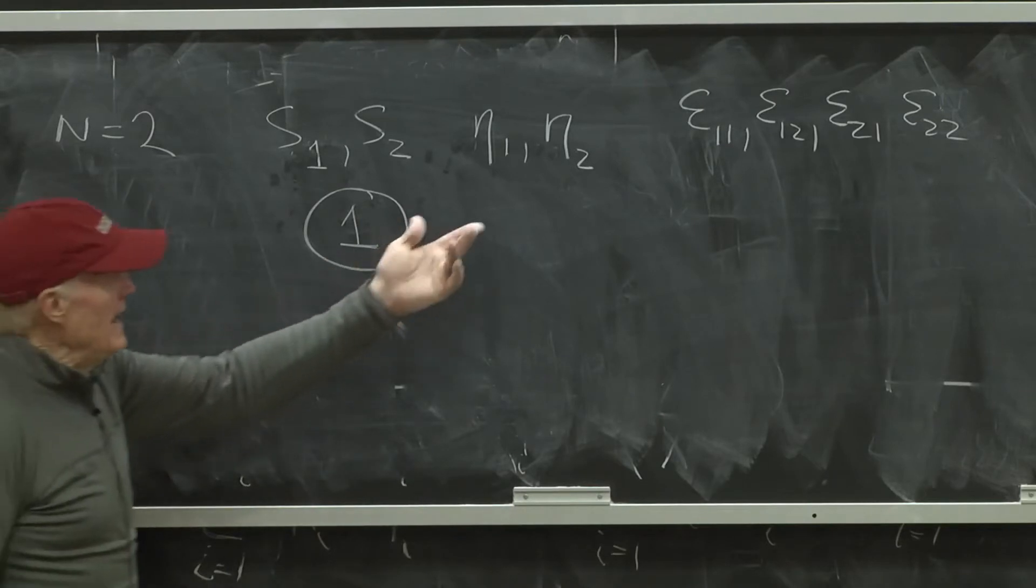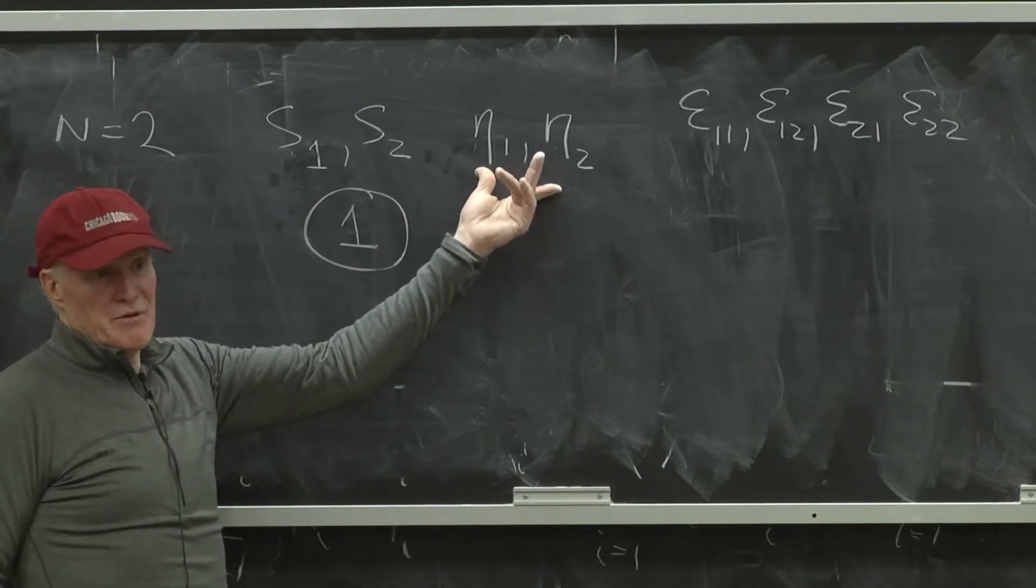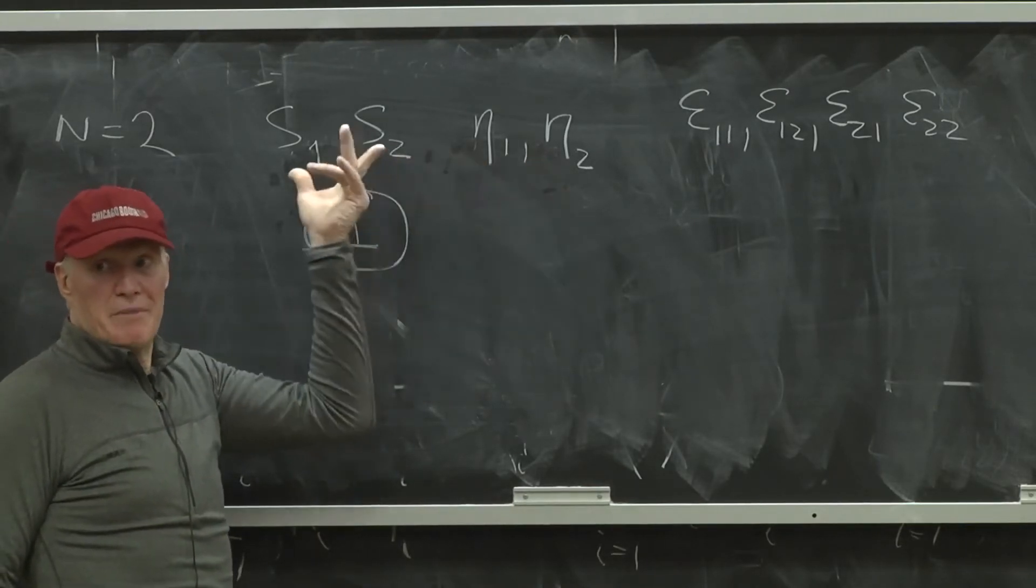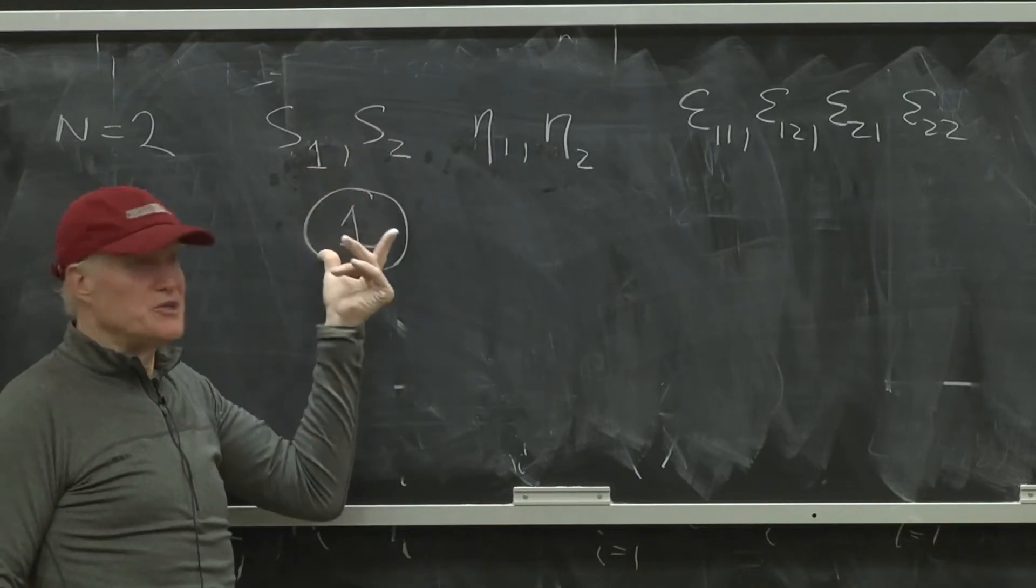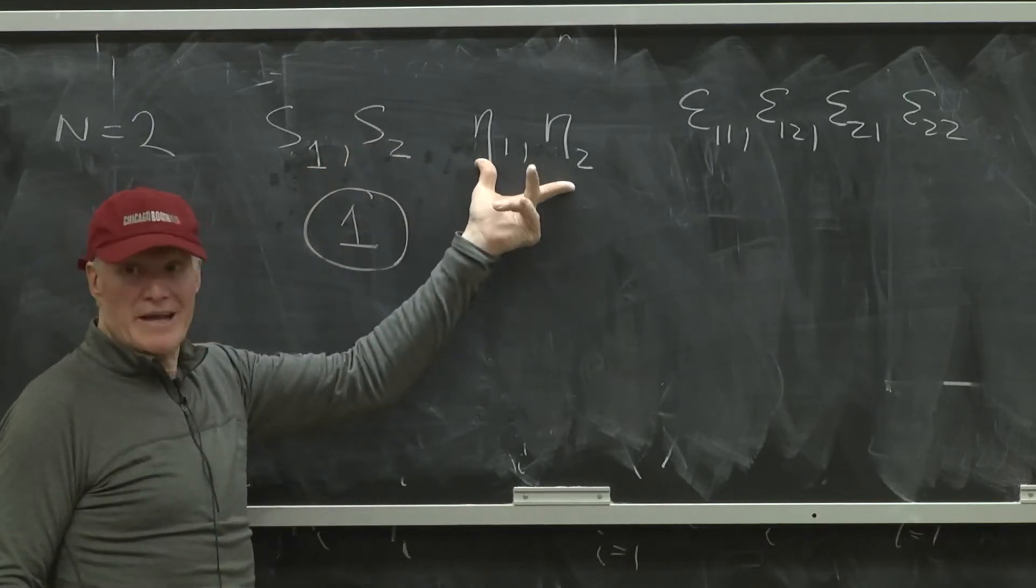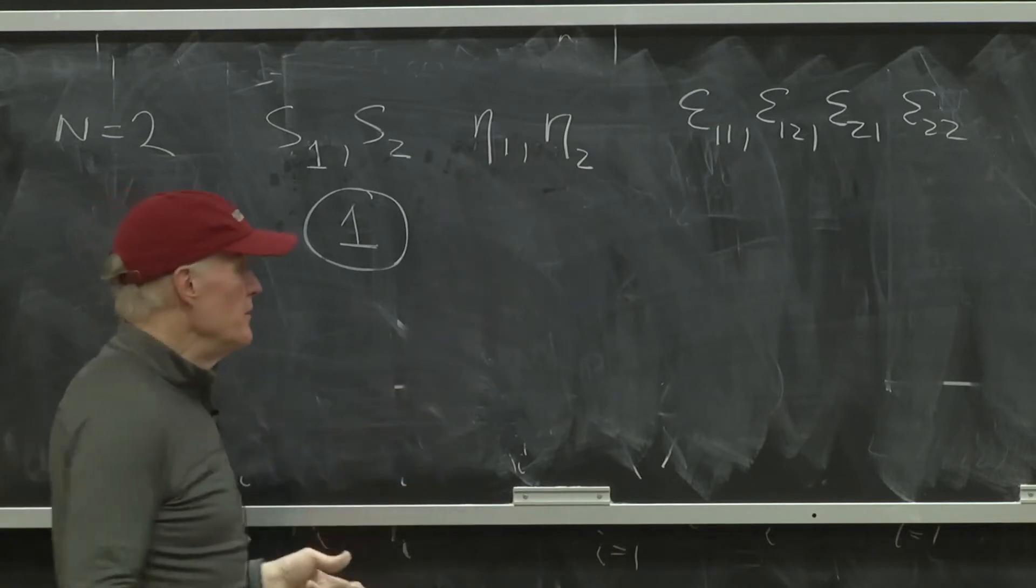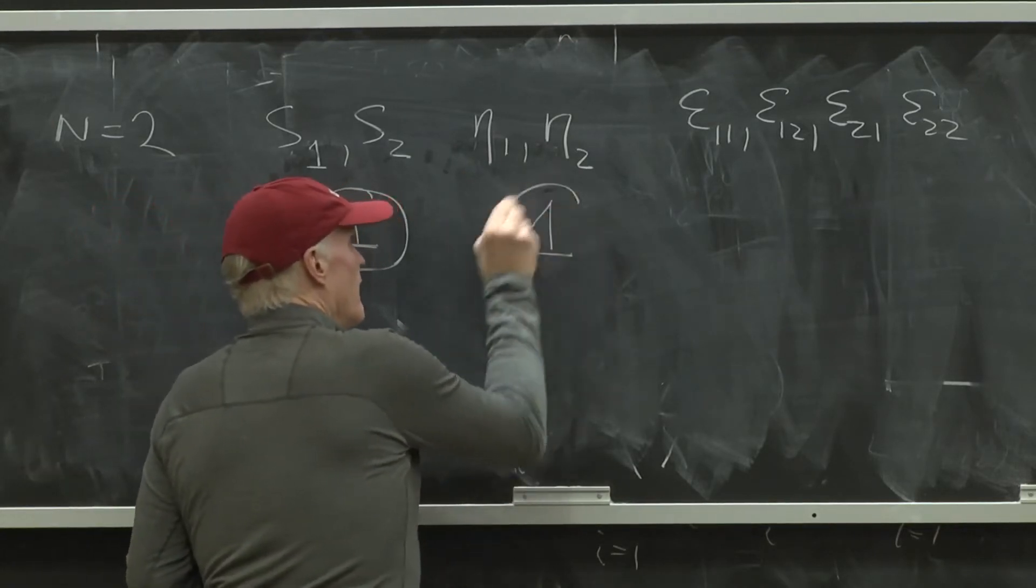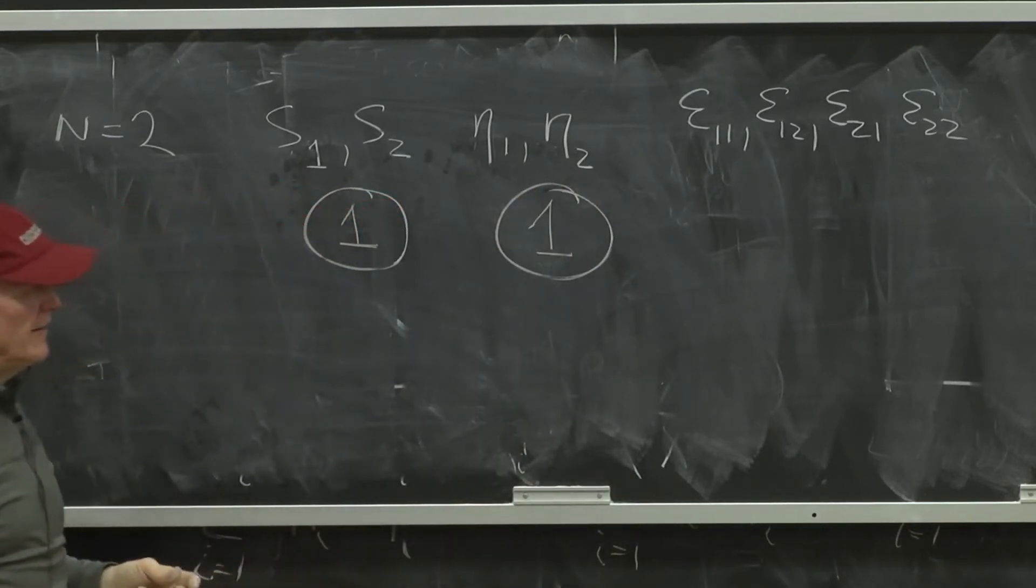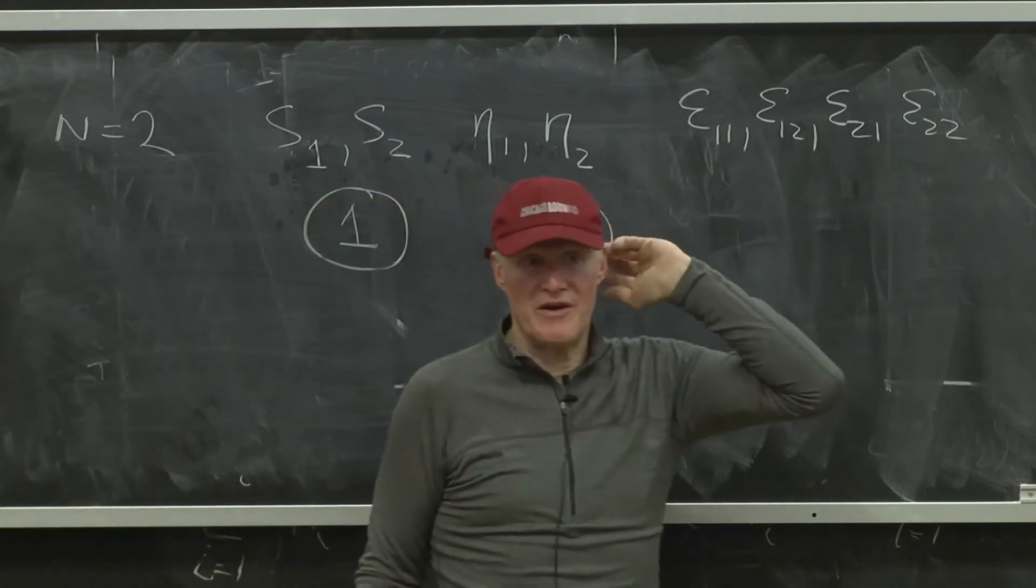Adding up, remember, weighted average of those income elasticities has got to be one, weighted by the shares. So once I know the shares, if I know one of the income elasticities, I know the other one.